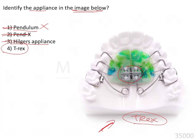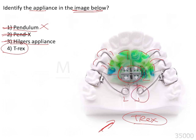To identify and differentiate the types of modifications of the pendulum appliance, you have to look at the image very carefully. We see wire components — the rests present on the occlusal surface of the premolars. We see a large acrylic button used for anchorage to bring about distalization of the molars. We see an expansion screw, which is why you might think it is a pendex appliance. We also see distalization springs.